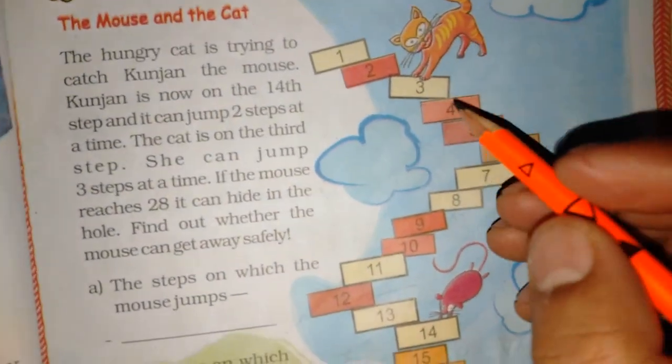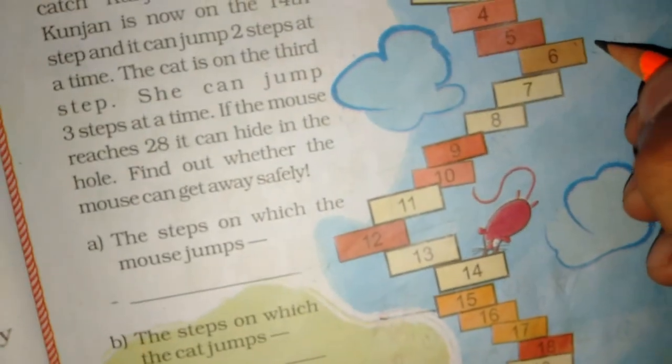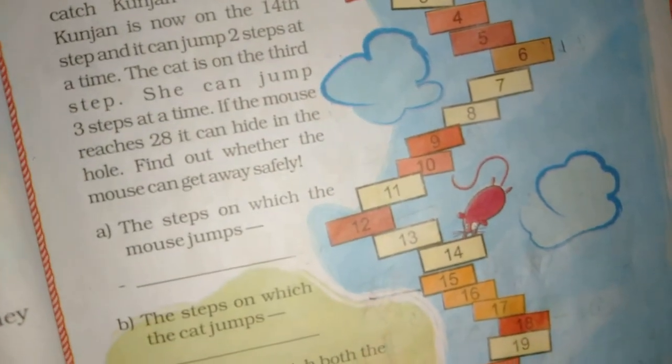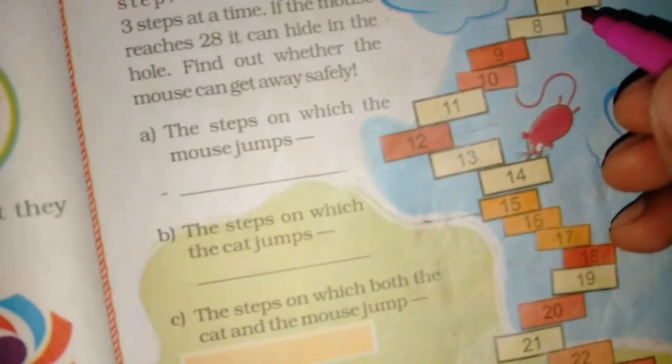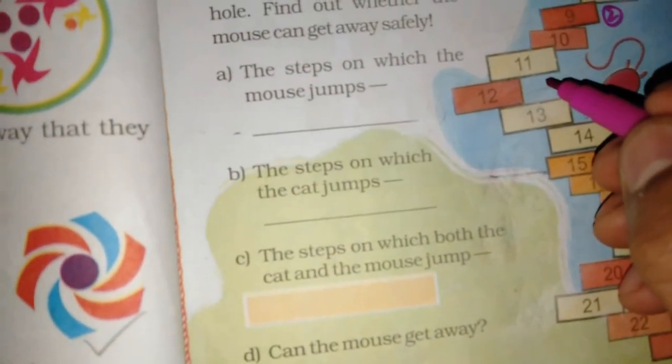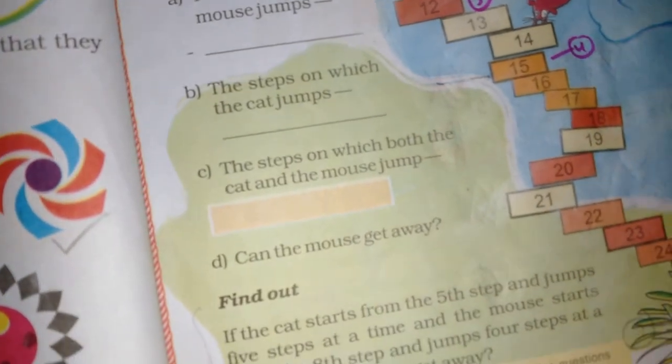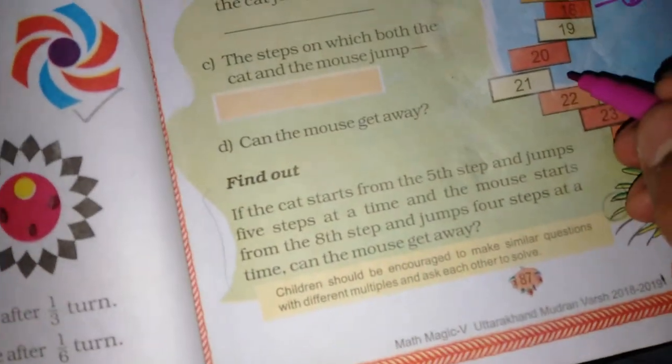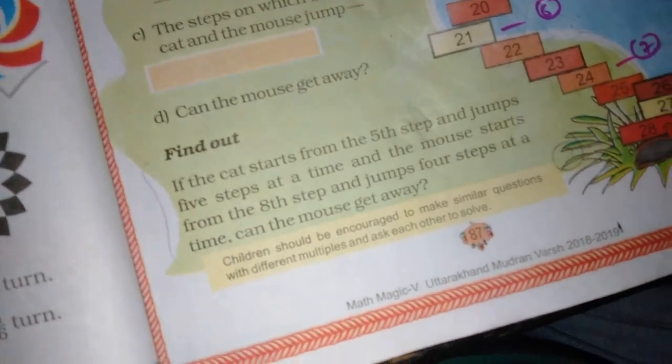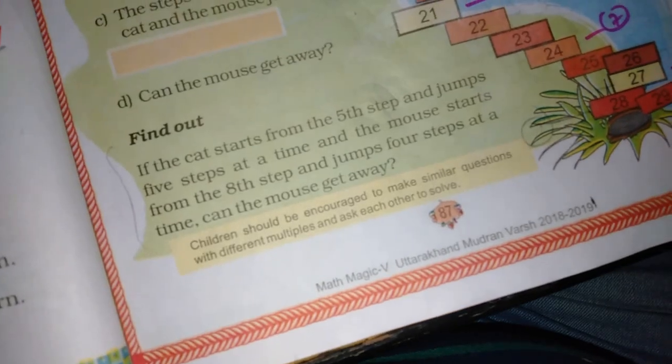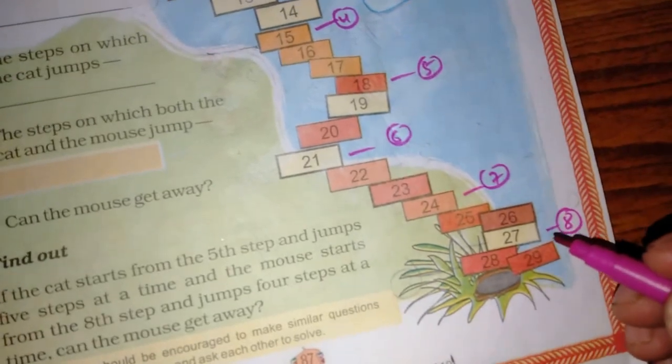But if the mouse reaches 28, it can reach the bill. So, first check. First of all, where are we going to get our cat in 3? Where are we going to go to the cat? 6, 9, 12, 15, 18, 21, 24, 27. Where are we going to get it?